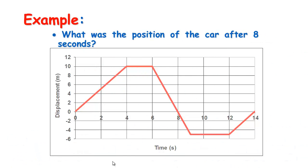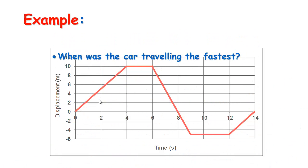First question: what was the position of the car after 8 seconds? We look at the 8-second mark — it's actually back at the origin or the starting point. When was the car travelling the fastest? We need to look at the gradient. Here the gradient is 10 over 4; here it's 10 over 2, so it's travelling twice as fast in the negative or south direction. And here it's 5 over 2, so the gradient here equals the first section, but it's actually twice as fast in this middle section.